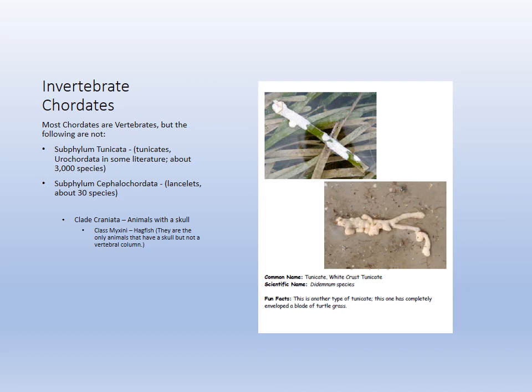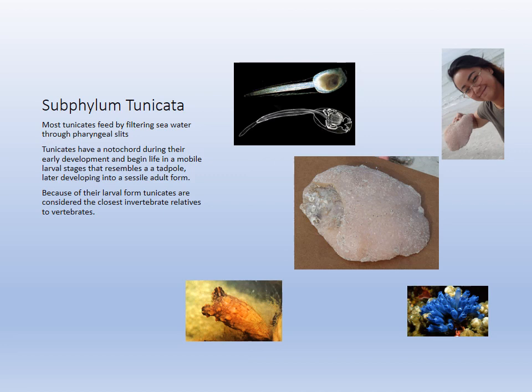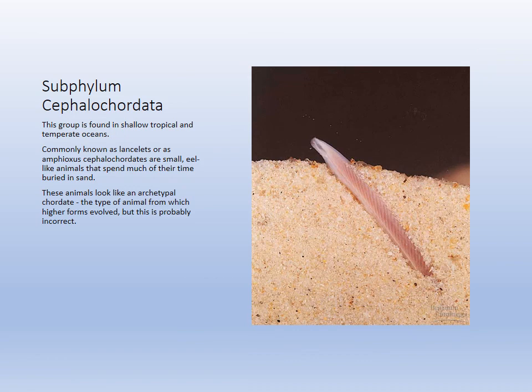Our invertebrate chordates are the tunicates — we've mentioned them a lot. Their larva resembles fish, but the adult resembles — well, some are really pretty in the Caribbean, but around here they look like chewed gum. You can see them on the seagrass. The larvae are very fish-like or tadpole-like with a nerve cord, so they are in Chordata but are invertebrate. The lancelets as well are invertebrate chordates. And the jawless fish — the hagfish — has a skull but no vertebrae.